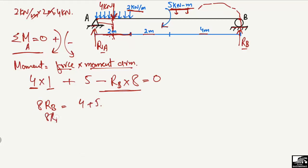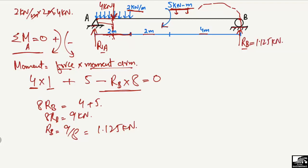Rearranging, 8·R_B = 4 + 5 = 9 kilonewtons. Dividing by 8, R_B = 9/8 = 1.125 kilonewtons.